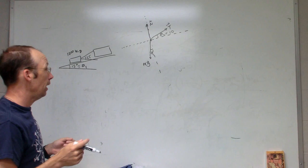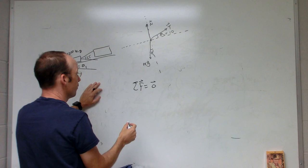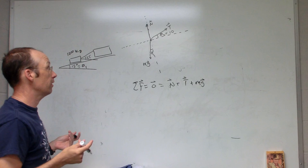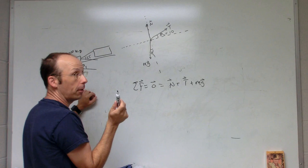Then I know the sum of the forces equals zero vector, so that would be N + T + mg. Of course, I want to do this in both the x and y directions, so I can write down both equations.